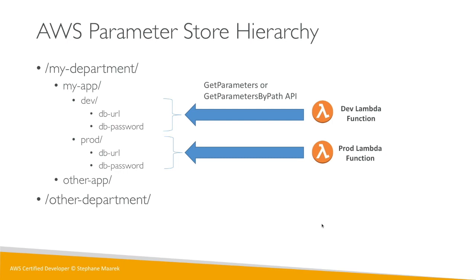To summarize: the store uses a hierarchy, you can have encrypted and plain text parameters, and you use GetParameters or GetParametersByPath. We'll practice this in the next lecture so you get a much better idea of how it works, because this is one of those services you need to see in action. It's very easy and incredibly useful — see you in the next lecture.